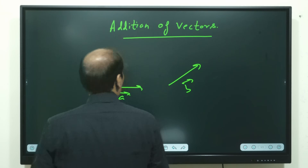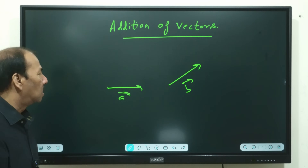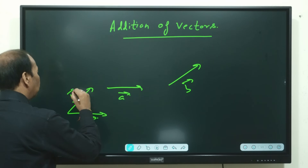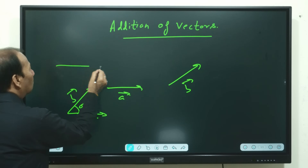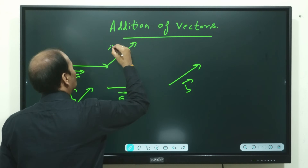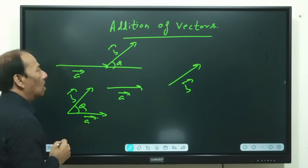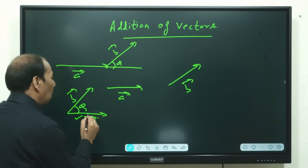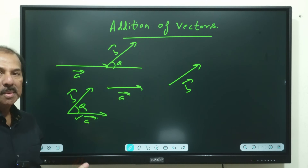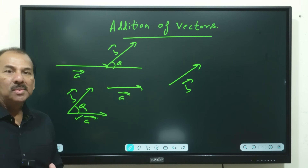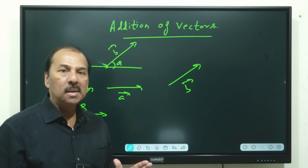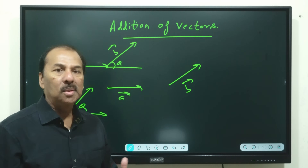Let us say the angle between A and B is theta. Angles are measured in the anti-clockwise direction with respect to the x-axis — that is the convention.